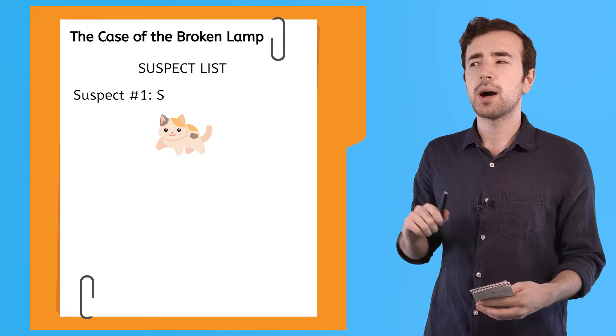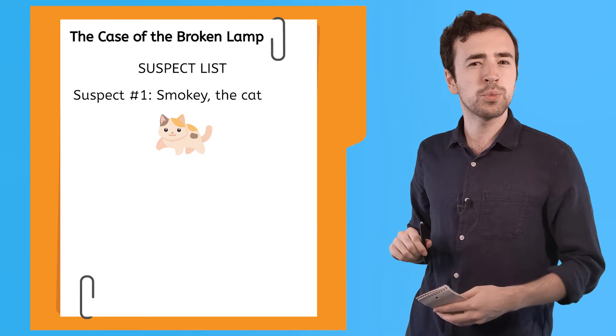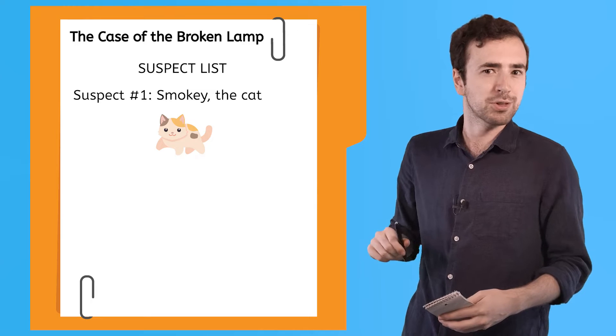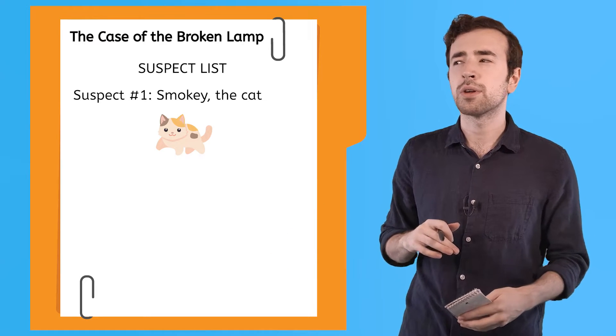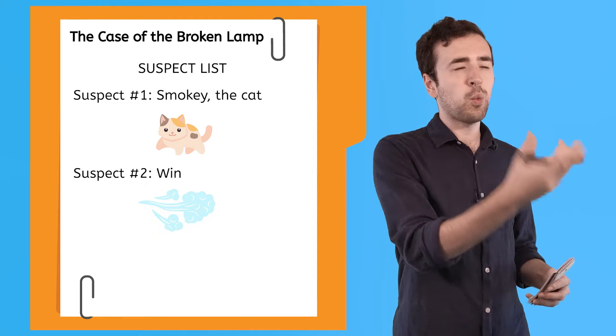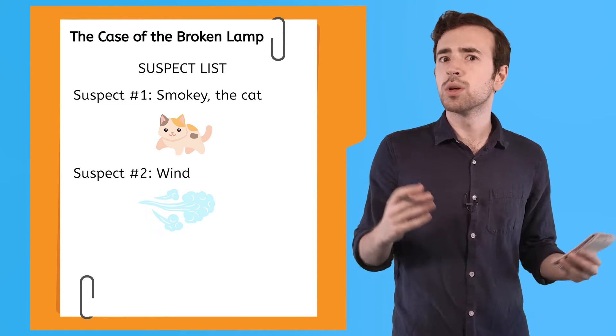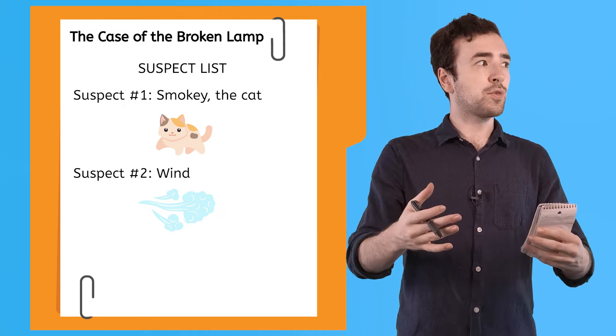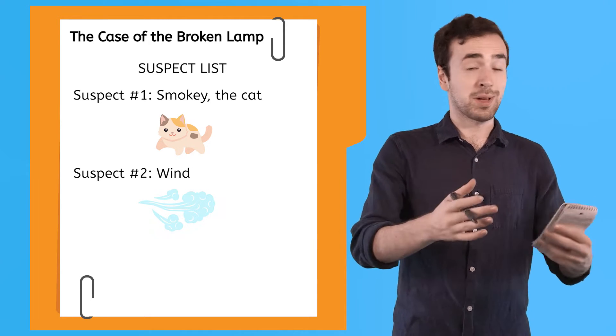First, my cat Smokey could have been feeling a little mischievous today and knocked the lamp over himself. Or I noticed that the window next to the lamp was open. A strong gust of wind could have blown into the house and knocked the lamp down.